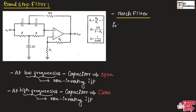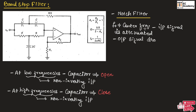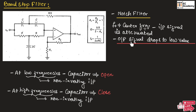Here, F0 is the center frequency at which the input signal is attenuated. Hence, the output signal drops to a low value. F0 is the center frequency between the low frequency and high frequency. At this center frequency, the input signal is attenuated, and hence the output signal will drop to a low value.